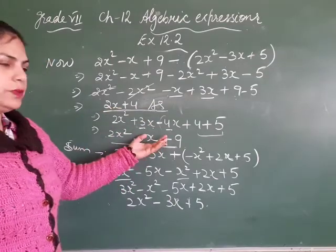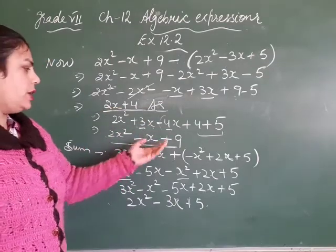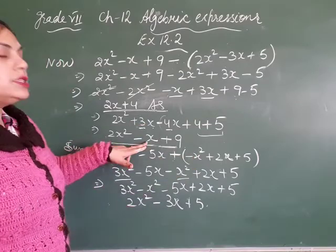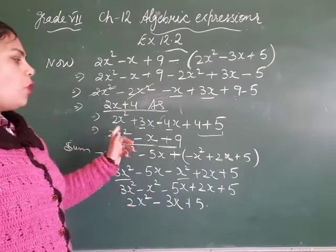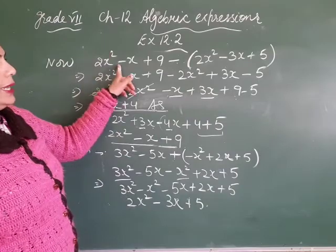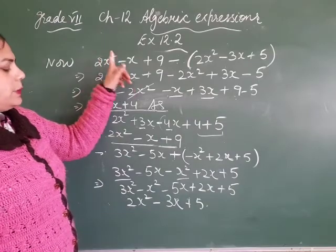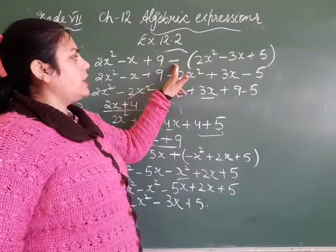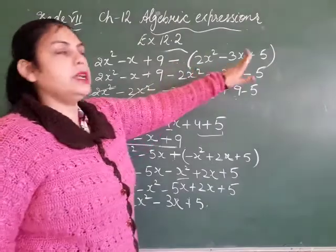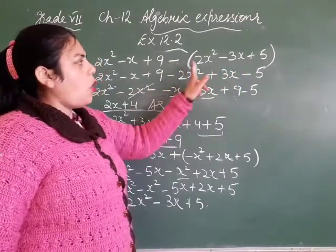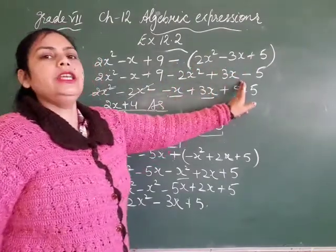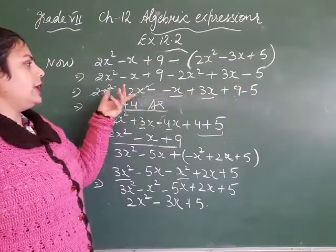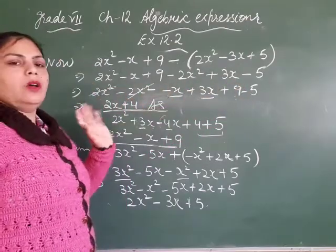To summarize: first we added the first two expressions, phir second two expressions ka sum kiya. 'From' ke baad jo term aati hai, use pehle likhte hain. Jab subtract karna ho, second expression ko minus lagake bracket mein rakhna hai. Aur jab bracket open karte hain, sabhi ke signs change ho jaate hain. Aisi se unka sum kya hoga — clear?